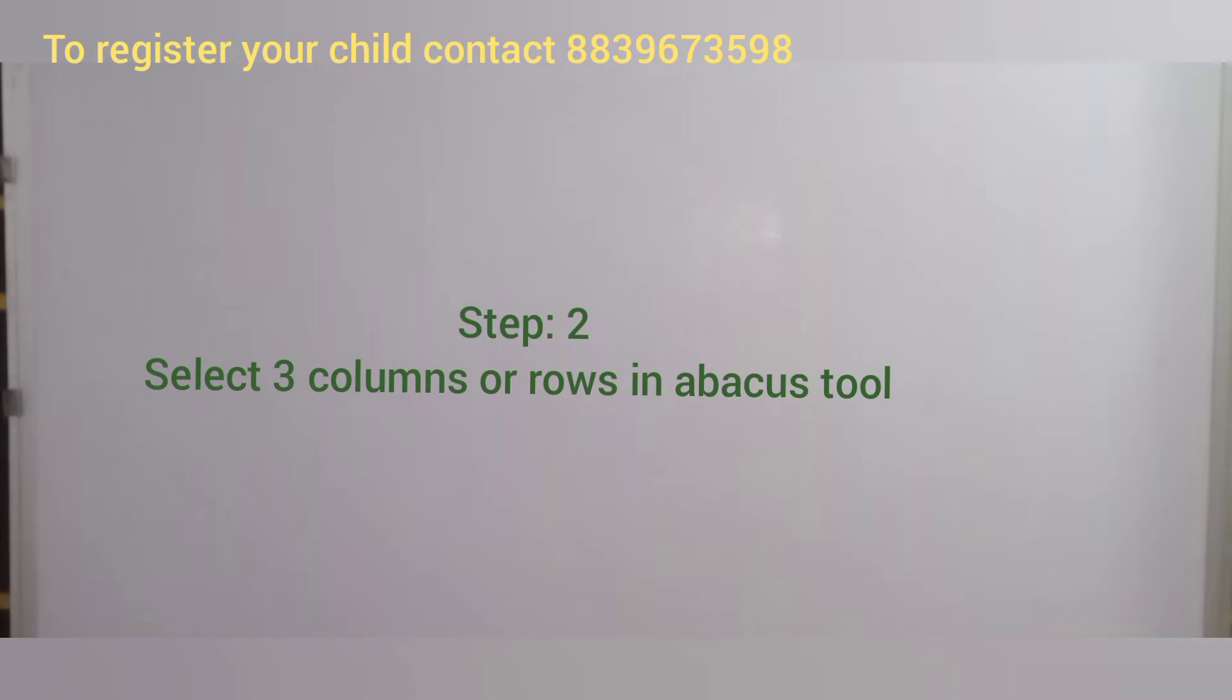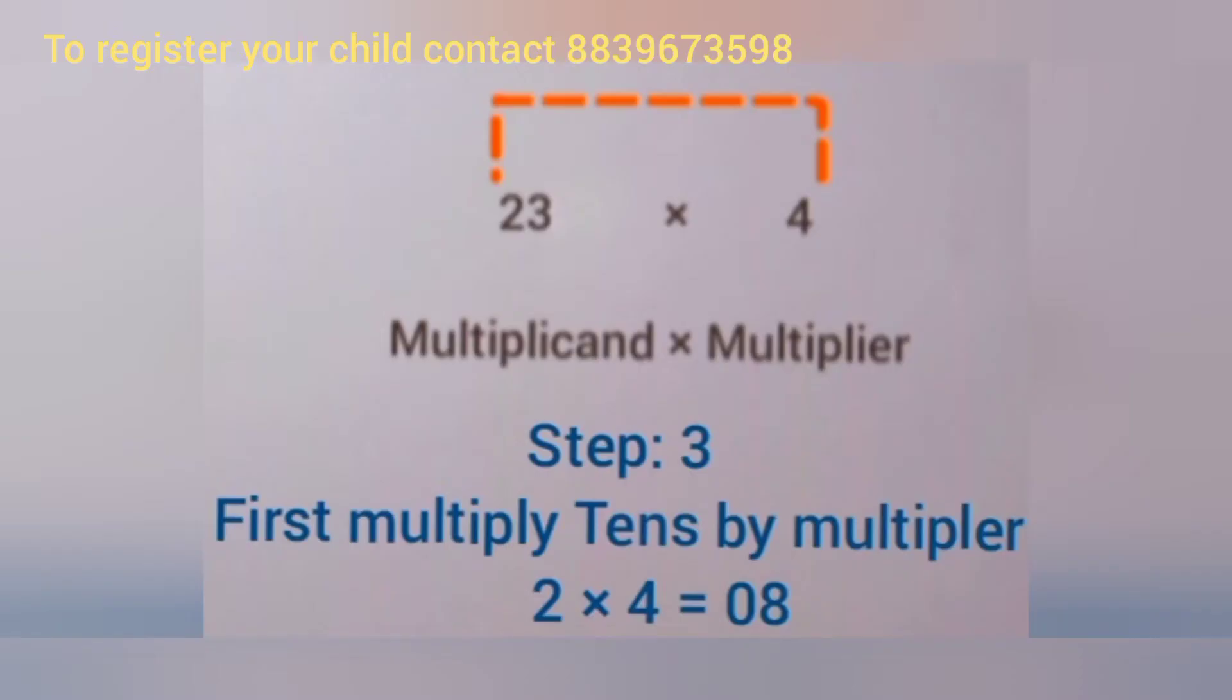That is 1, 10, and 100. Now multiply tens by the multiplier. That is 2 × 4, which equals 8. We can't take a single digit, so we make it double digit by putting 0. The answer will be 08.